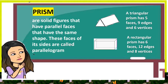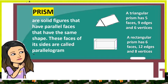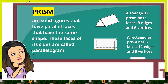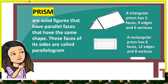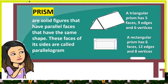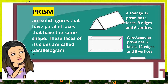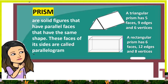The next solid figure we have is prism. Prisms are solid figures that have parallel faces that have the same shape. The side faces of a prism are called parallelograms. A triangular prism has five faces, nine edges, and six vertices. A rectangular prism has six faces, twelve edges, and eight vertices.